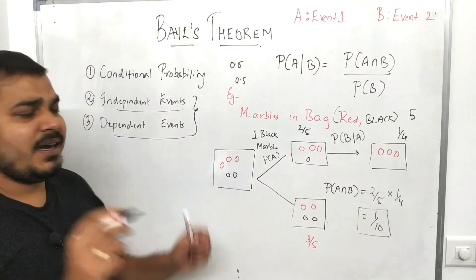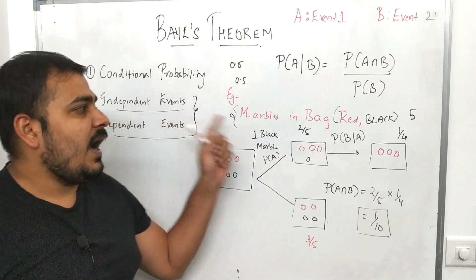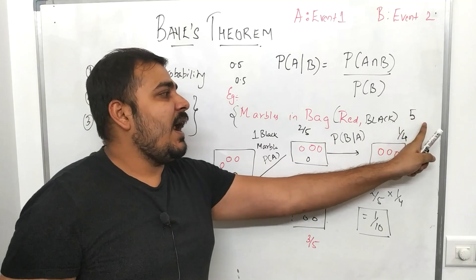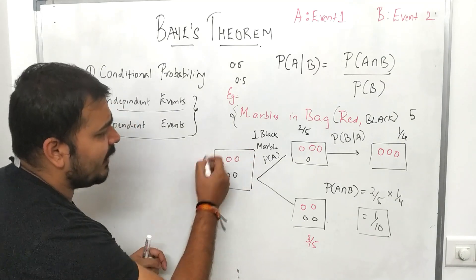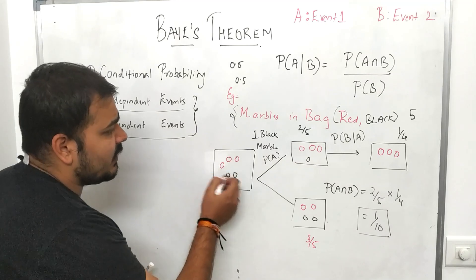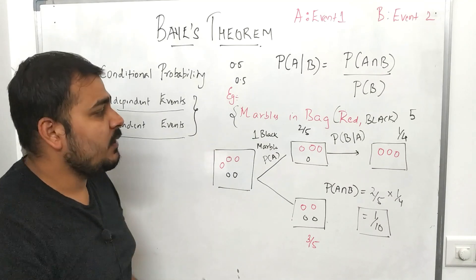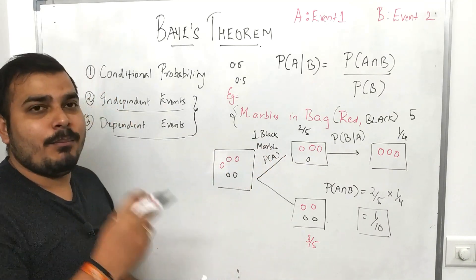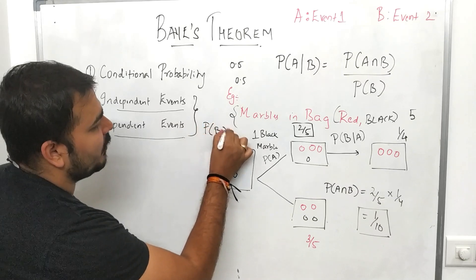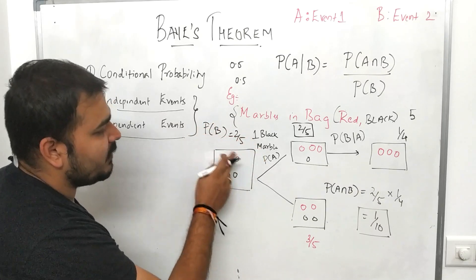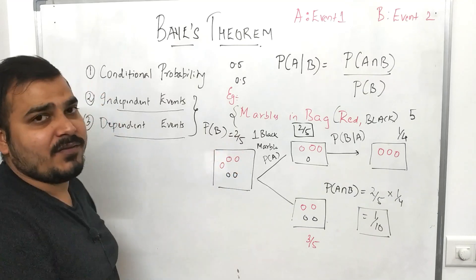Now for dependent events, suppose in a bag I have some marbles — red and black — and the total number of marbles is five: three reds and two blacks. In the first event, if I pick up one black marble, the probability of getting a black marble is two by five, because there are five total marbles and two are black.